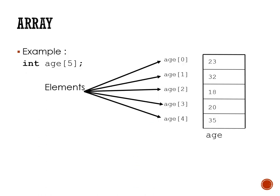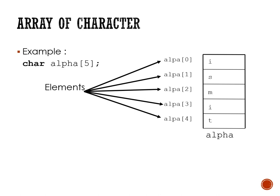This is a basic way to declare an array with a single declaration of integer variable, which can contain five values of ages. The elements inside are 23, 32, until 35, and h[0], [1], [2], [3], [4] stand for the indexing. Another example of array declaration uses the character type — the variable 'alphabet' will contain five values: i, s, m, i, and t.